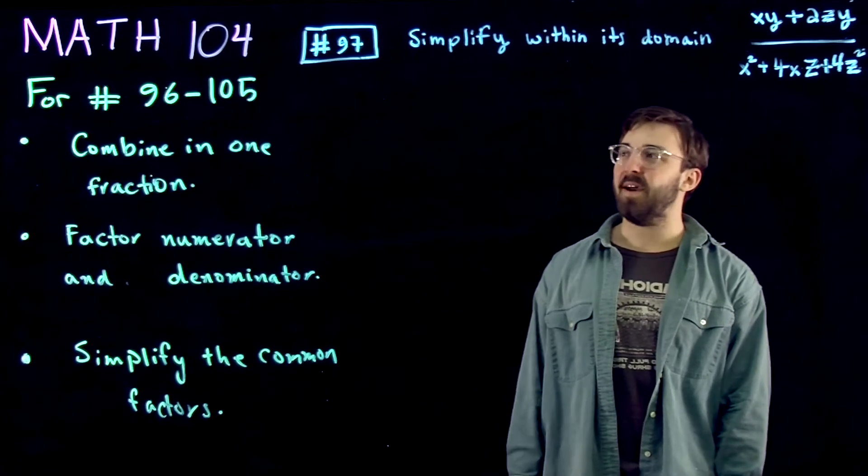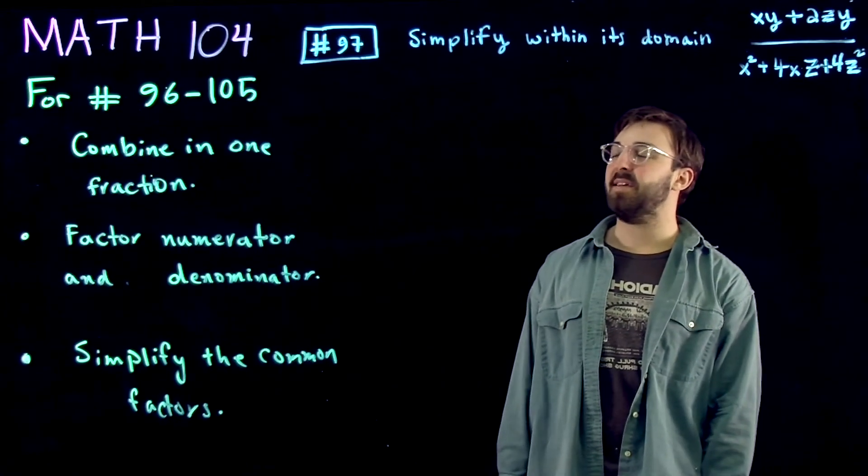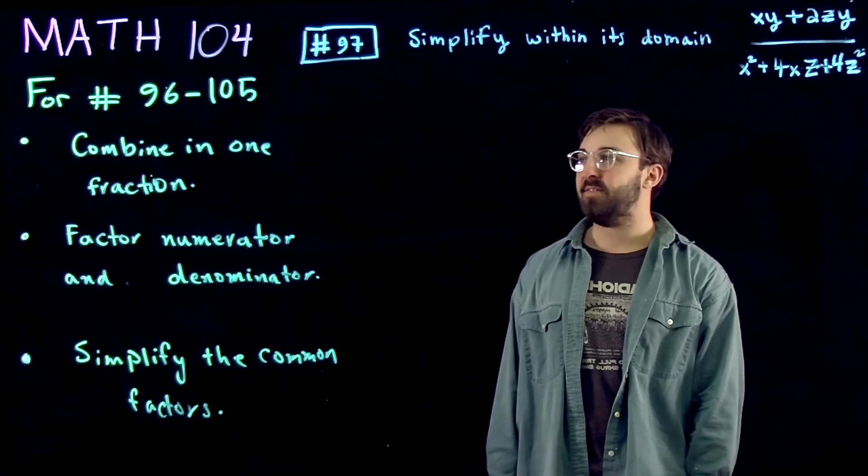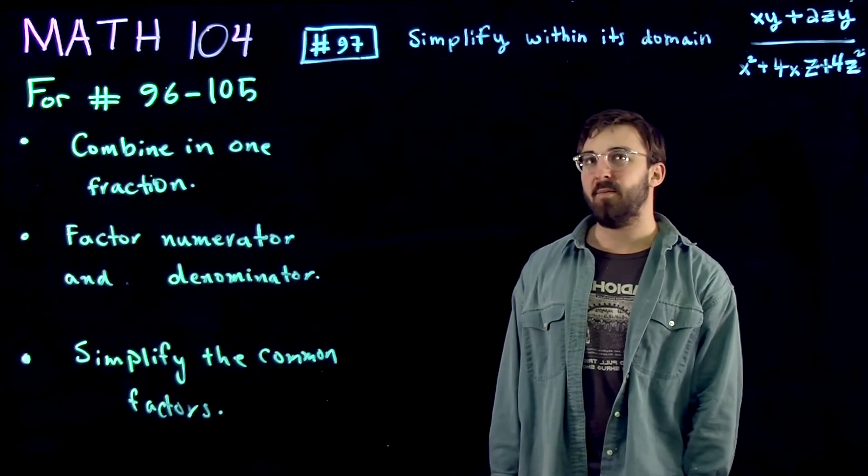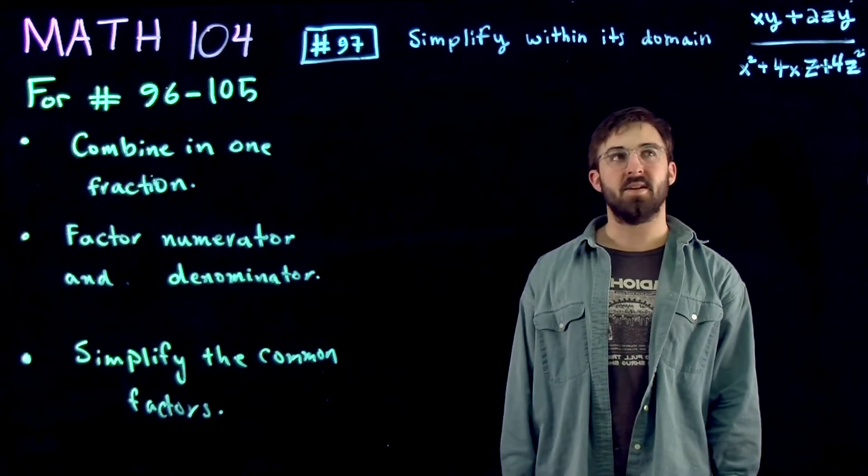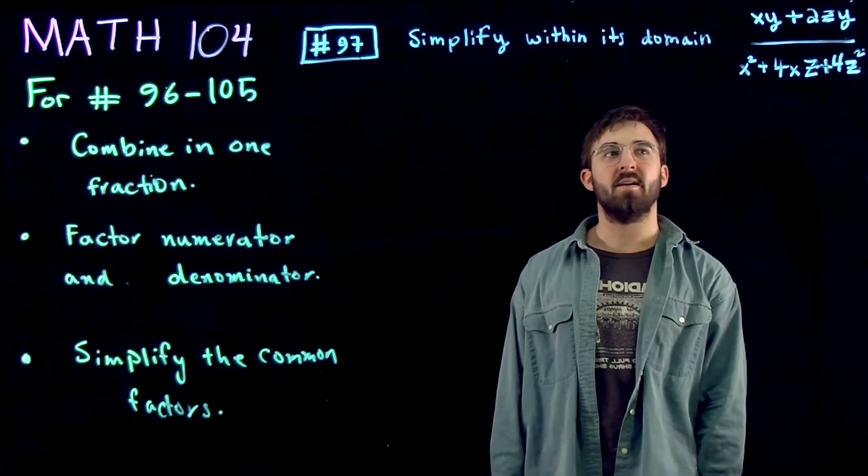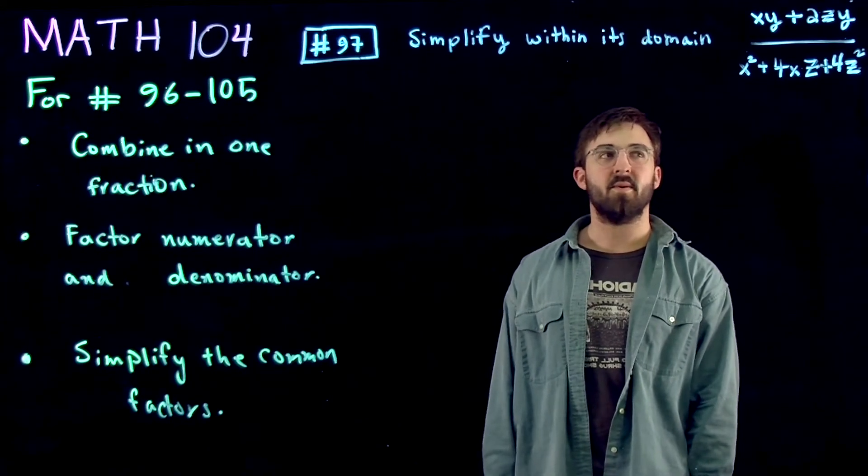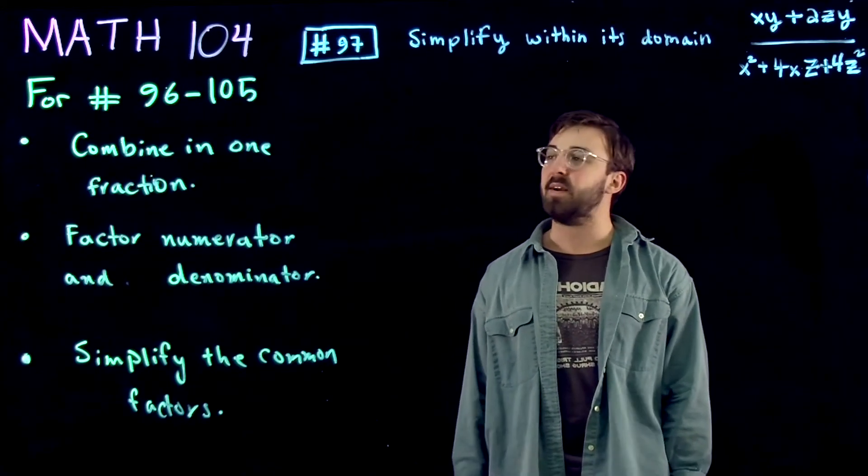Hello, we're doing Gateway Math 104 question number 97 from the pool 96 to 105. We're going to simplify within its domain the expression xy plus 2zy all divided by x squared plus 4xz plus 4z squared.